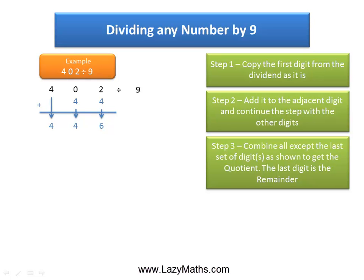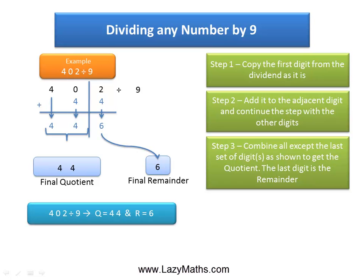The next step is to call the last sum that we got, which is 6, as the final remainder, and the remaining digits become the final quotient. That's the shortcut. So 402 divided